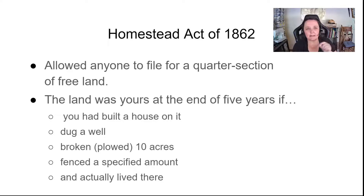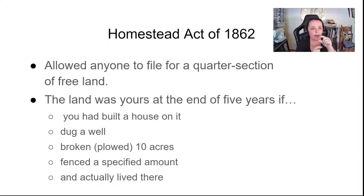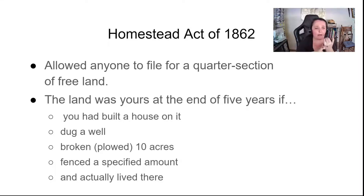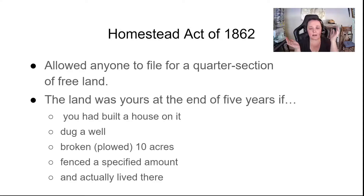All of this facilitated the Homesteading Act. In 1862, Congress passed the Homesteading Act, which basically said any citizen of the U.S. could file for a quarter section of free land — so not a whole mile square, but a quarter mile by quarter mile quarter section. Then you had to build a house, dig a well, plow some land, fence some areas, and live there. And then you got that land for free — having stolen it from the Native Americans.